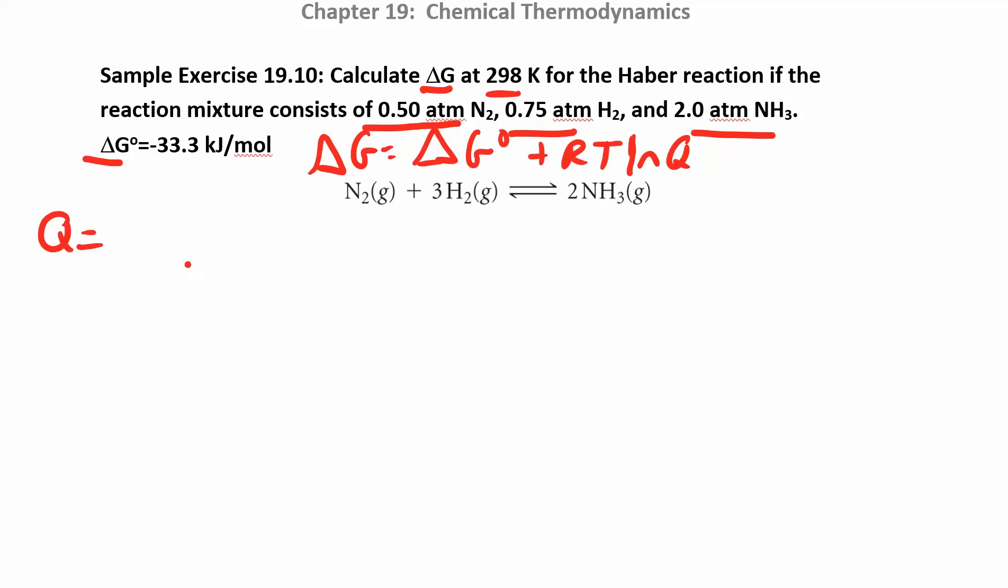Q is equal to the products over the reactants. So it's going to be the pressure of NH3 squared. Since we have pressures, if they gave us concentrations, you can use those as well. The pressure of N2 times the pressure of H2 cubed. And so we can plug in these values. NH3 is 2.0 squared over 0.5 times 0.75 cubed. And your Q value ends up being 18.96.